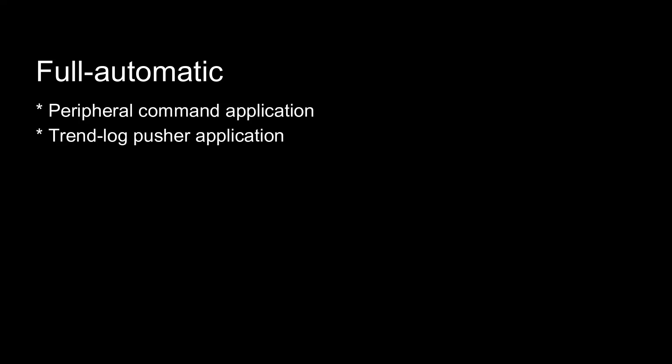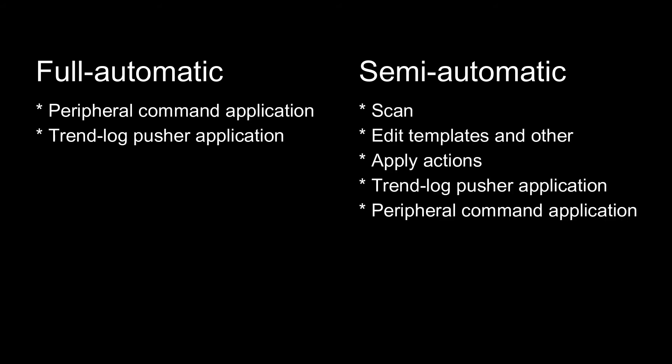To summarize, we can do a fully automatic configuration of the mBus by only using the peripheral command application and the trend log pusher application. Or we can do a semi-automatic configuration by using scanning, added templates and other things, apply actions, and using the trend log pusher application. The peripheral command application can then also be activated to automatically configure any later attachments of mBus meters.